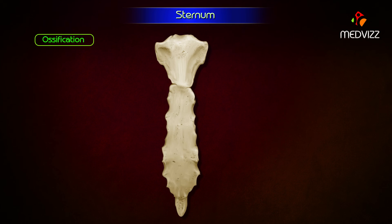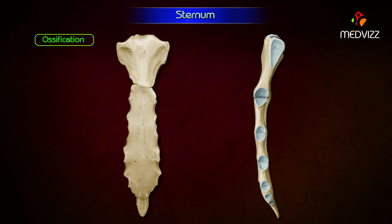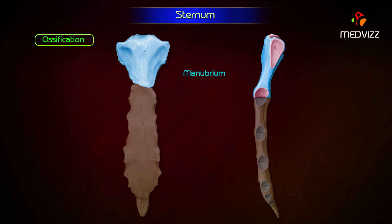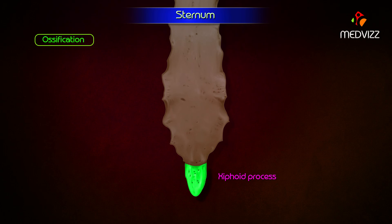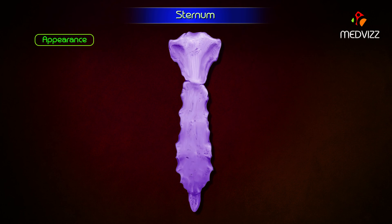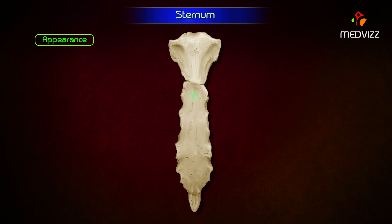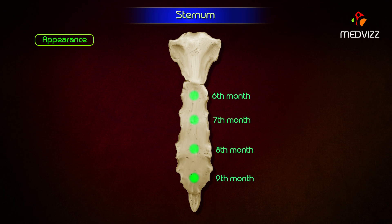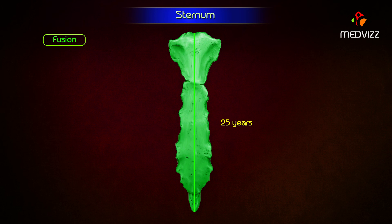Ossification. The sternum develops from two vertical cartilaginous plates which fuse in the midline. It ossifies from six double centers: one for the manubrium, four for the body, and one for the xiphoid process. The centers appear in descending order: the center for the manubrium appears by the fifth month of intrauterine life; the first sternebra by the sixth month; the second sternebra by the seventh month; the third sternebra by the eighth month; and the center for the xiphoid process appears by the third year. Fusion between the sternal plates takes place from below upwards, beginning at puberty and completed by 25 years.